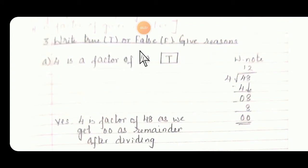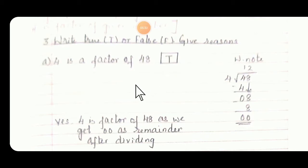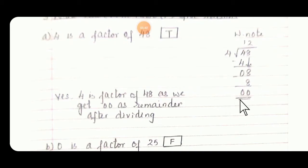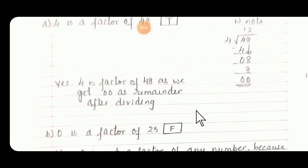True or false — give reason. 4 is a factor of 48. Yes. In table 4 we have 48. Another way is to divide and see — you got remainder 0 here. So it is yes, it is a factor.